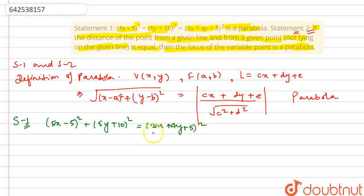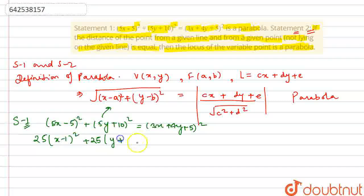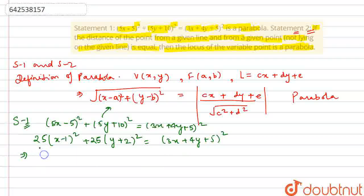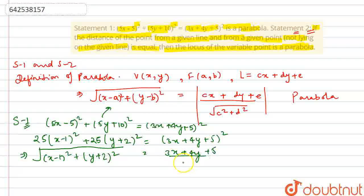To check whether this is a parabola, we convert it into standard form. Taking 5 common from the left side: 25(x − 1)² + 25(y + 2)² = (3x + 4y + 5)². Rearranging, taking 25 common and sending it to the denominator, then taking the square root of both sides, we finally get: √[(x − 1)² + (y + 2)²] = |3x + 4y + 5| / 5.